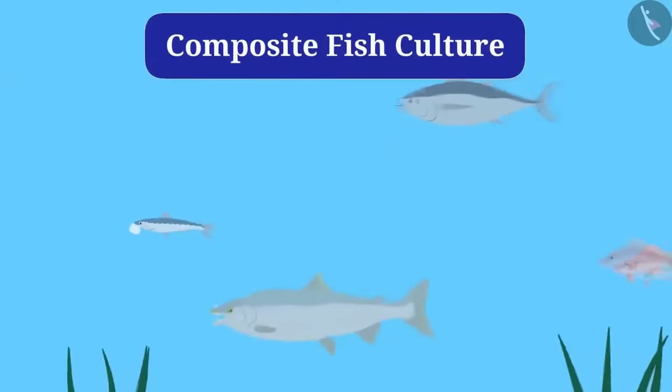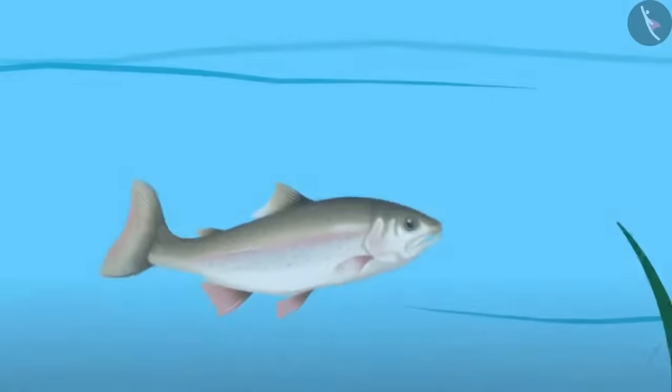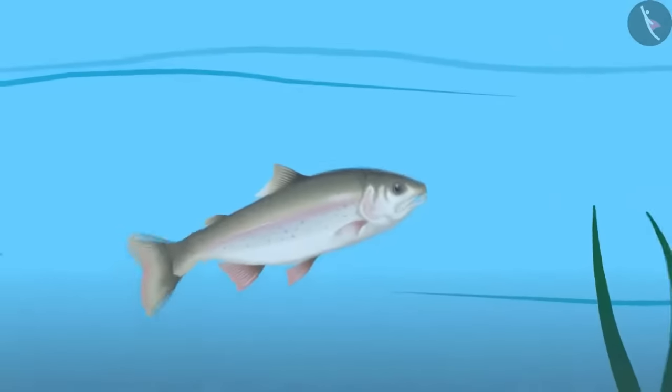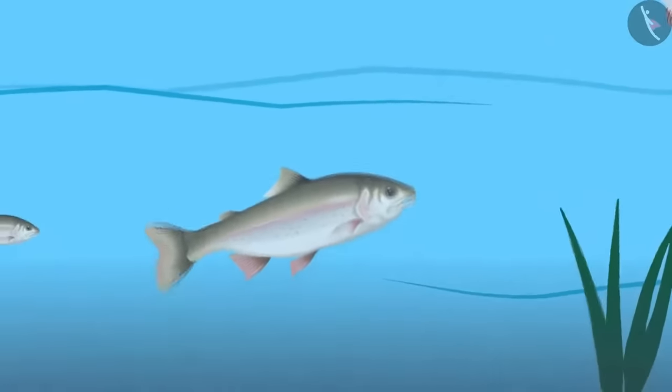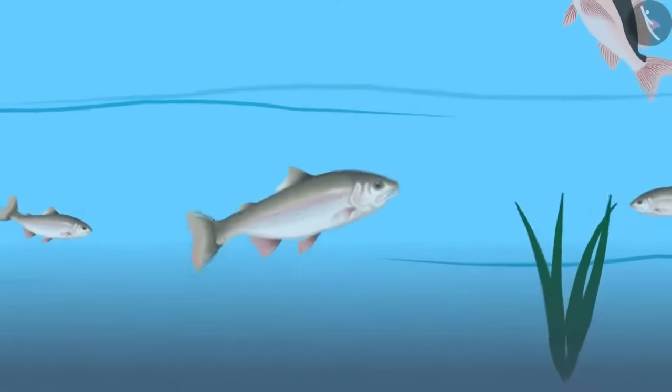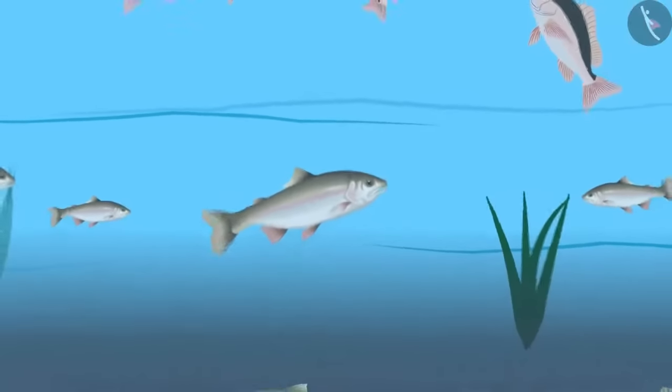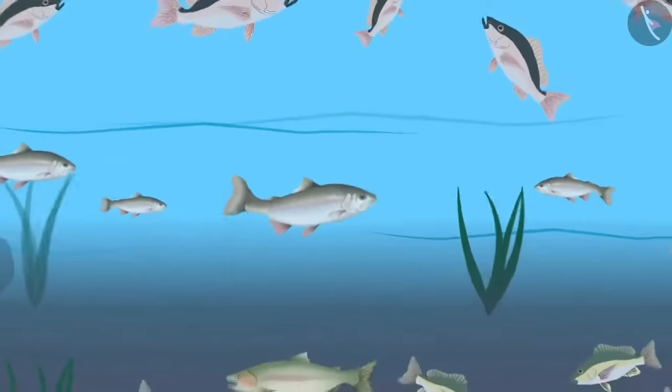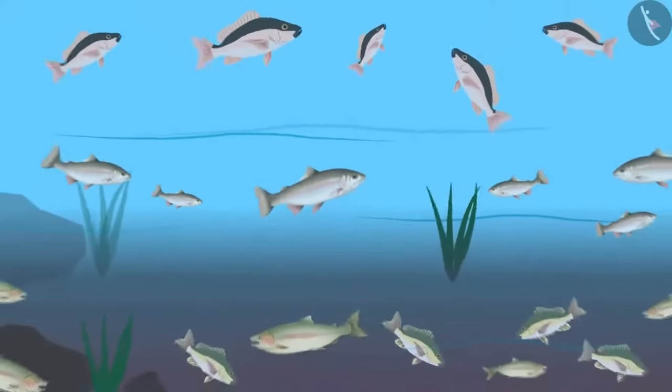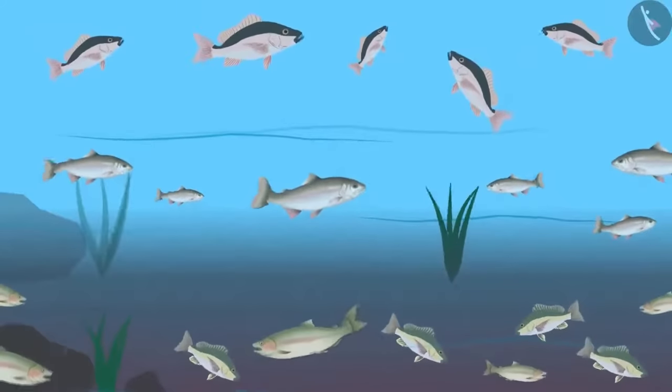In this system, five or six species of fish are used in a single pond. And species of fish are selected so that there is no competition for food among them. And food available in all parts of the pond is used.